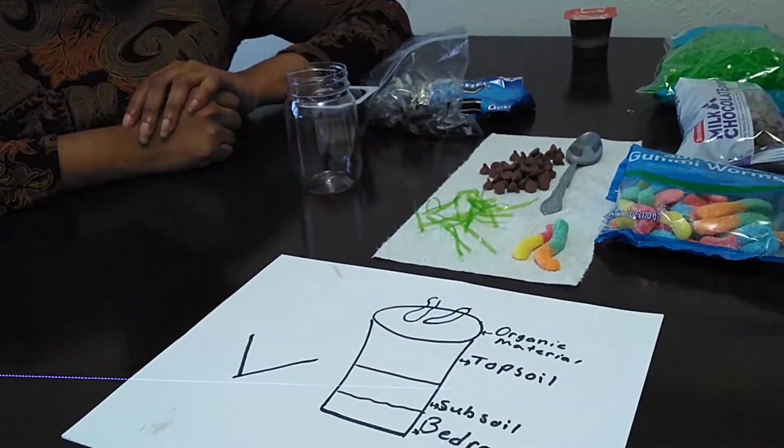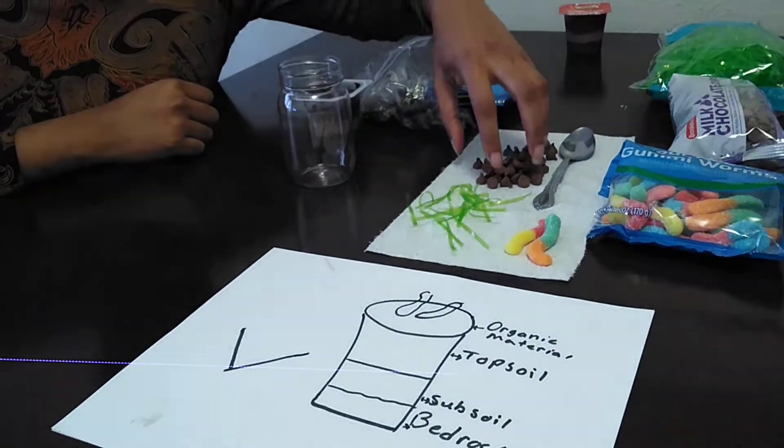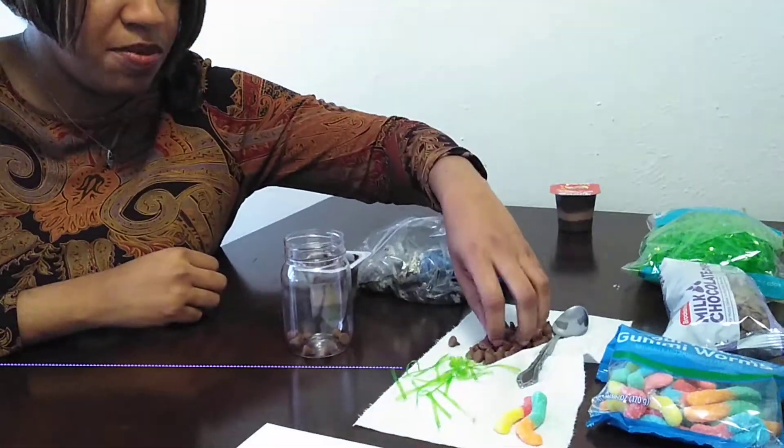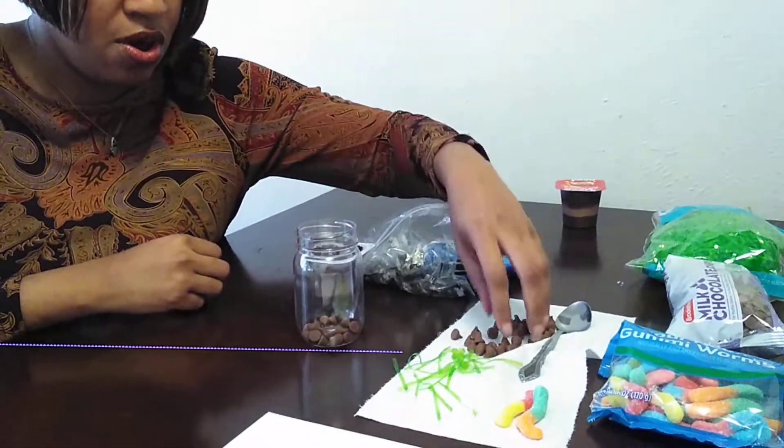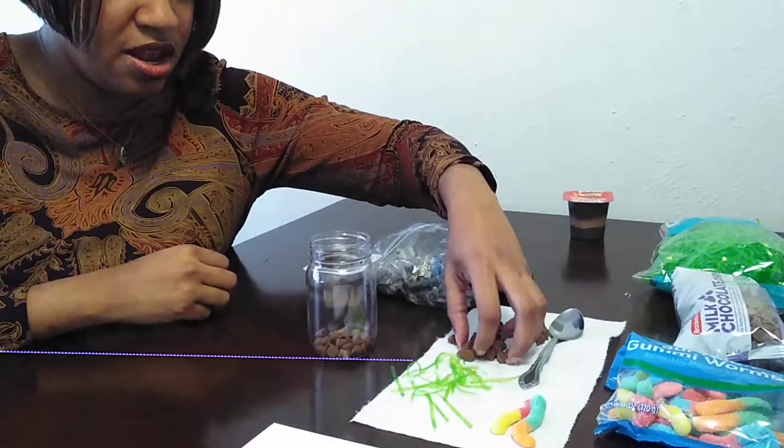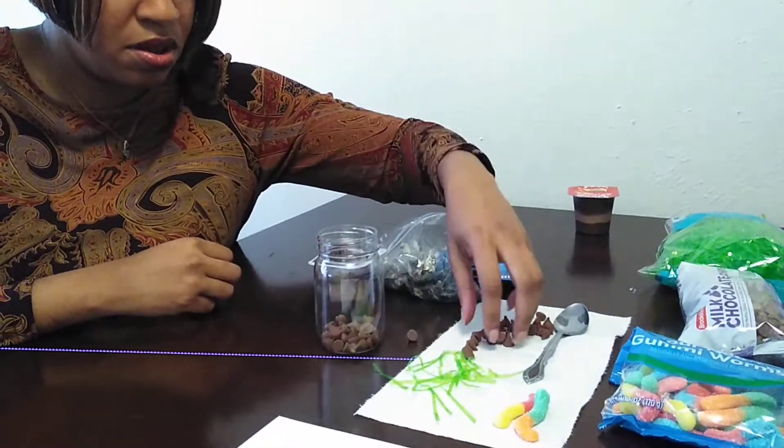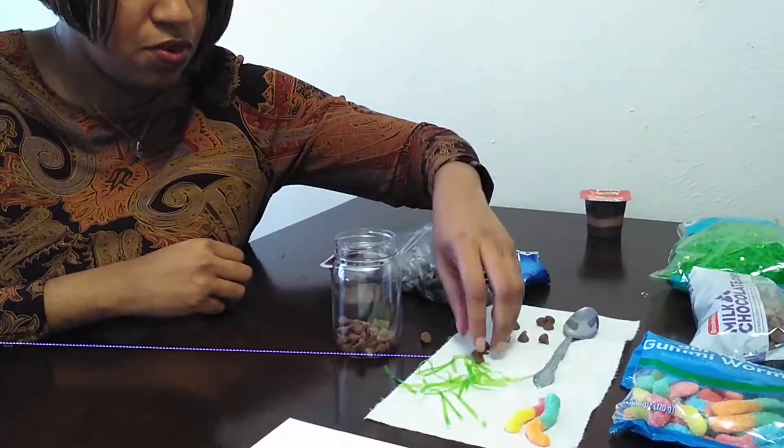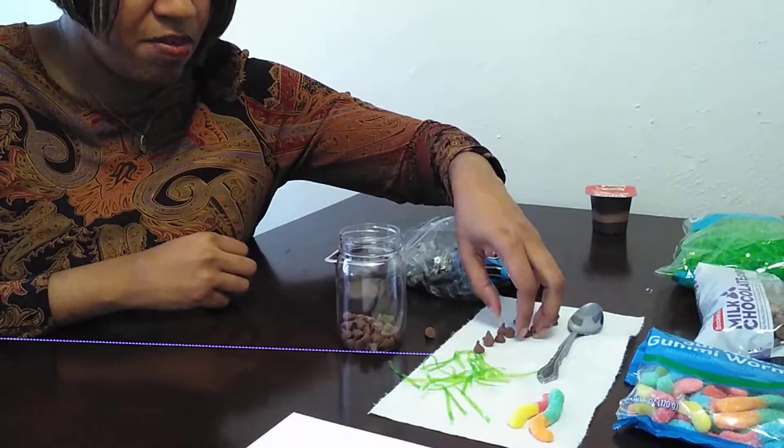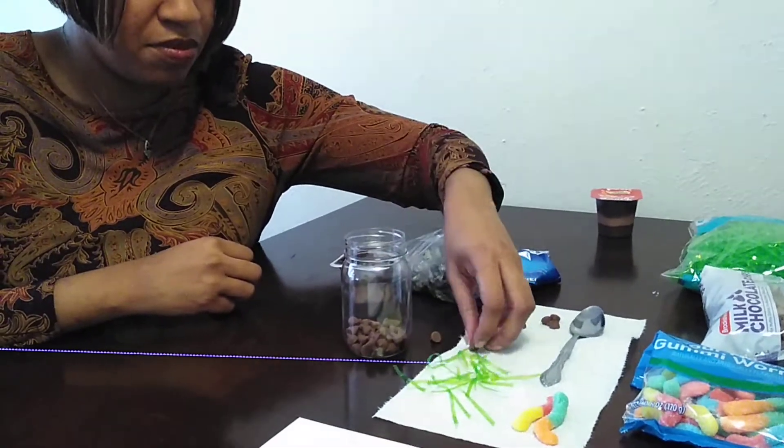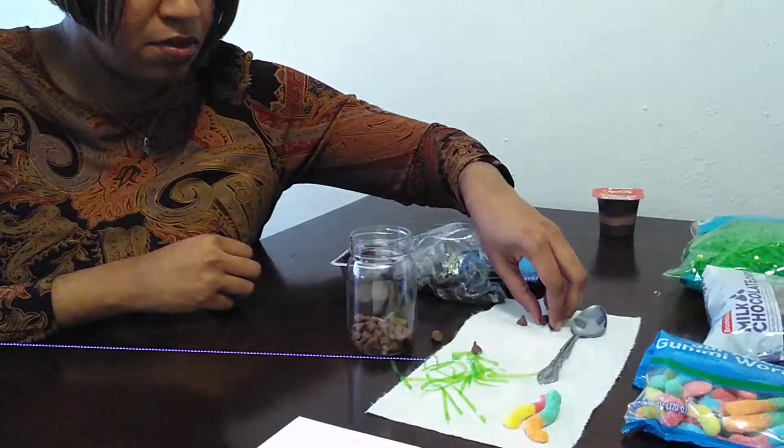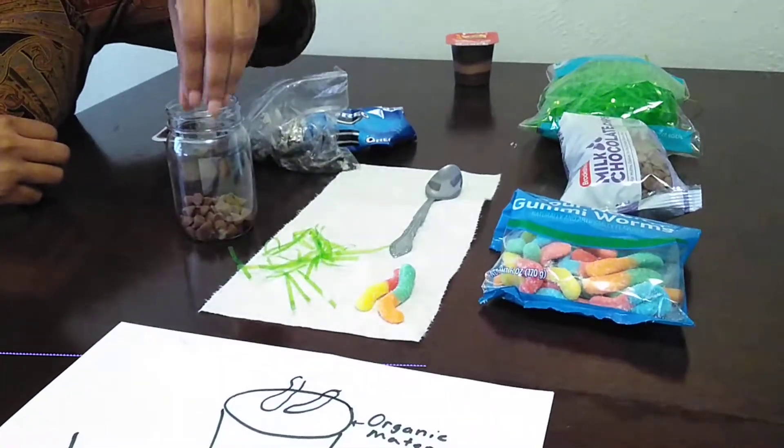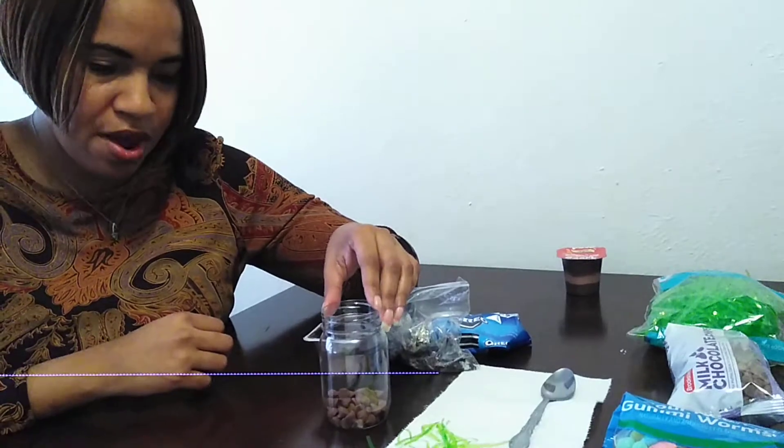So we will have first our bedrock. We are going to take the chocolate chip pieces, put them in a jar. Hopefully I have enough to get that layer going. We will have a lot of chocolate chip pieces, or our bedrock.